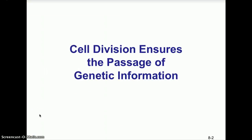Chapter 9: Cell Division and Reproduction. Cell division ensures the passage of genetic information. In this chapter we're going to look at mitotic cell division, which takes place immediately when the sperm and the egg meet — so it's the formation of body cells.